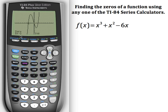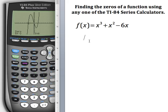Once I do that, it comes up and shows me that x equals negative three, y equals zero. So then one of my zeros is x equals negative three.